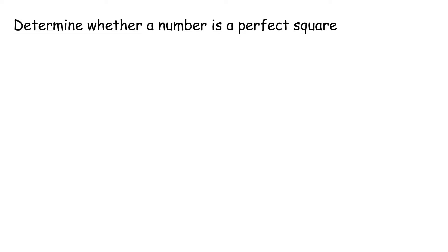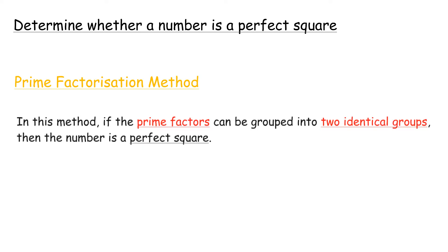To determine whether a number is a perfect square, we can use the method of prime factorization. In this method, if the prime factors can be grouped into two identical groups, then the number is a perfect square.